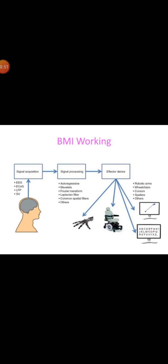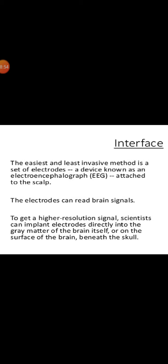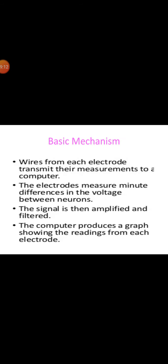This is how BMI is working. The easiest and least invasive method is a set of electrodes or device known as electroencephalograph attached to the skull. The electrodes can read the brain signals. To get higher resolution signals, scientists can implant electrodes directly onto the gray matter of the brain itself or on the surface of the brain beneath the skull. The wires from each electrode transmit their measurements to a computer and the electrodes measure minute differences in the voltage between neurons. The signal is then amplified and filtered and the computer produces a graph showing the readings from each electrode.